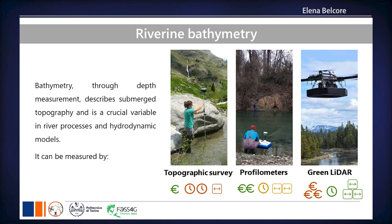Then we can use new technologies like green lidar. We can also have echo sounders that, instead of working on cross-sections measuring point by point, acquire information in a matrix way.